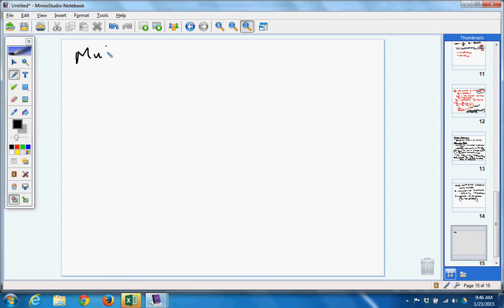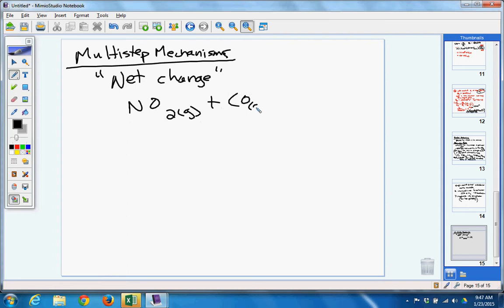Multi-step mechanisms. The net change represented by an equation often occurs by a multi-step mechanism. The net change is represented, net change of an equation. So let's say I have this equation. NO2 gas plus carbon monoxide makes nitrogen monoxide and carbon dioxide. Basically, it looks like I took an oxygen off of nitrogen dioxide and I added it to carbon monoxide.